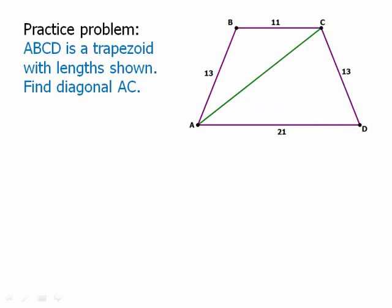Here's a practice problem. ABCD is a trapezoid with lengths shown — find the diagonal AC. There's no direct formula, so we have to find this step by step, working our way up to the Pythagorean theorem. As a general rule, in any geometry problem where you're asked to find the length of a slanted line, chances are very good that the Pythagorean theorem is hidden somewhere in that problem, and your job is to figure out how to use it.